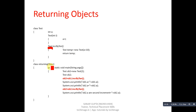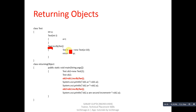In the ReturningObject class, ob1 is declared with new and 2 is passed as an argument, so the parameterized constructor sets ob1's attribute to 2. A Test reference ob2 is created, then incrementBy10 is called with ob1. Inside the method, a+10 means 2+10=12 is stored in temp's attribute. When temp is returned, it is received by ob2. So ob1.a prints 2 and ob2.a prints 12.